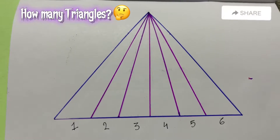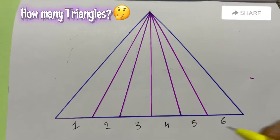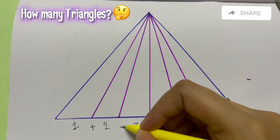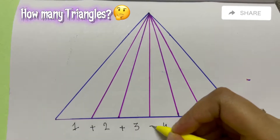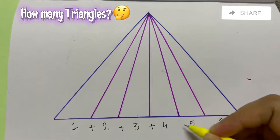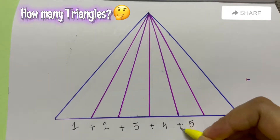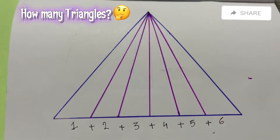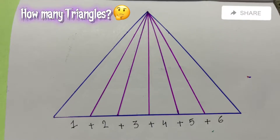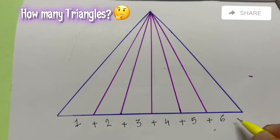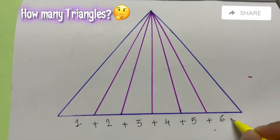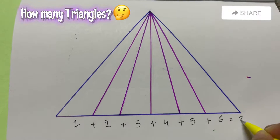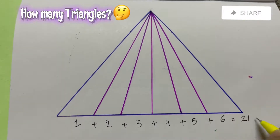All you have to do is just add them up together: plus 4, plus 5, plus 6, which is equal to 21 triangles.